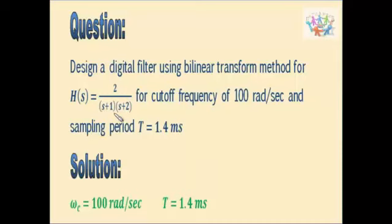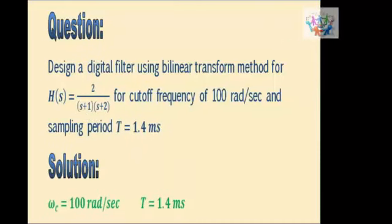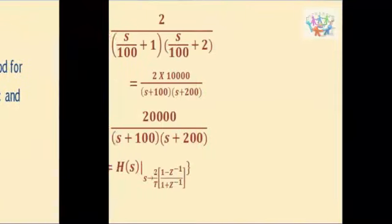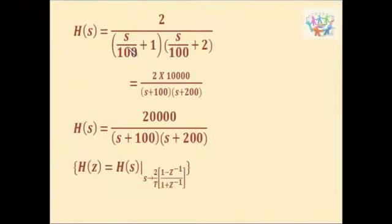Now this H of S is in the unnormalized form and we have to change it into the normalized form. We have to substitute S as S by omega_C. So, substituting S by omega_C, we have S by 100 plus 1 into S by 100 plus 2. Now we have to simplify this and by taking the LCM. After taking the LCM, we have H of S is equal to this value. So, this is the normalized form.